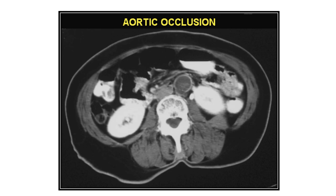On CT with IV contrast, both kidneys show enhancement while the aorta shows no enhancement — the lumen is filled with thrombus and the wall shows calcification indicating atherosclerosis. This is the CT appearance of LeRiche syndrome.